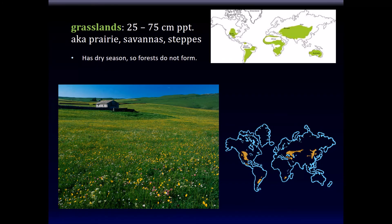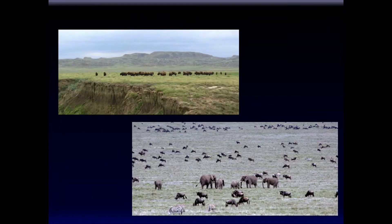Grasslands. Pretty. But no trees. So, compared to 0.004, they get 25 to 70, this is centimeters, of precipitation. They're also known as prairies, savannas, and steppes. It has a dry season, so the forests don't form. See, for forests to survive, there have to be a lot of water. Grasslands. Got it? Grasslands.